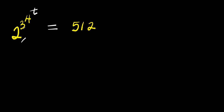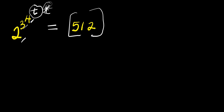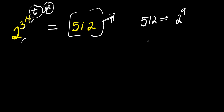We have (2 to the power of 3 to the power of 4) raised to the power of t, and this equals 512. We will be solving for the value of t that satisfies this equation. To begin, we are going to express 512 in its exponential form: 512 is equivalent to 2 to the power of 9, because if you multiply 2 into 9 places you get 512. So we replace 512 with 2 to the power of 9.